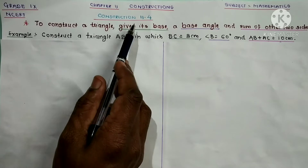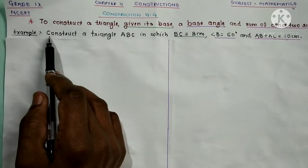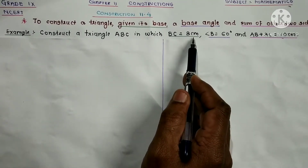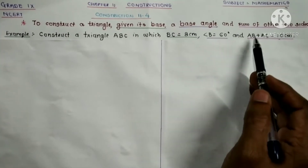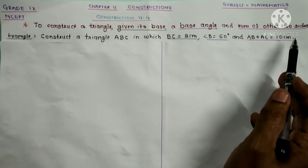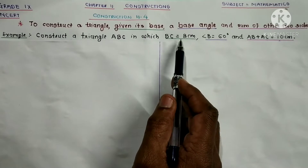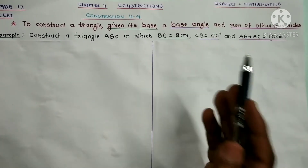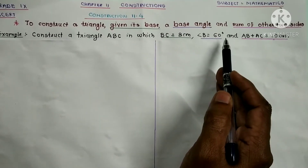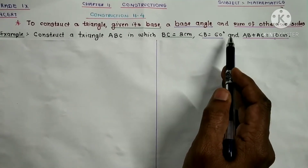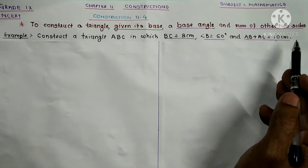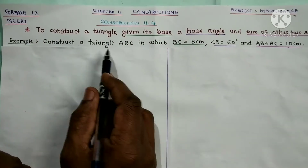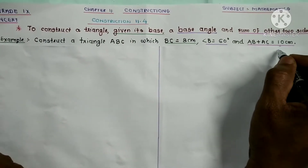For this Construction 11.4 I have taken one example: construct a triangle ABC in which BC is equal to 8 cm, Angle B is equal to 60 degrees, and AB plus AC is equal to 10 cm. You can practice by taking BC as 7 cm, Angle B as 45°, 75°, or 30°, and AB plus AC as 11 cm, 12 cm, or 15 cm. Let us draw one rough sketch of triangle ABC.